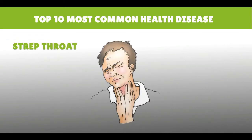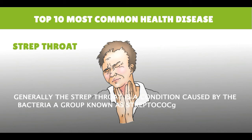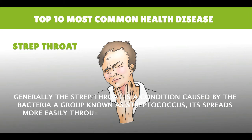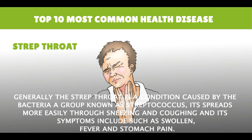Strep Throat. Generally, strep throat is a condition caused by a group of bacteria known as Streptococcus. It spreads easily through sneezing and coughing, and its symptoms include swollen glands, fever, and stomach pain.